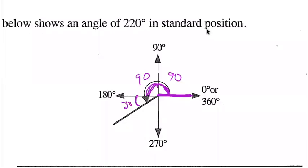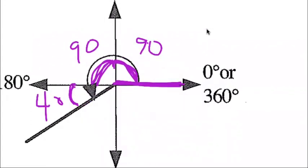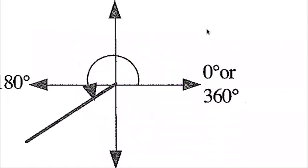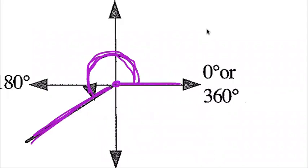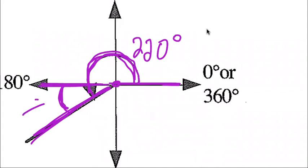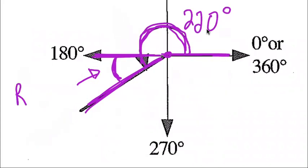90 and 90 is 180. We want 220, so this is going to be 40 degrees. This is a rotation angle — it starts in standard position on the x-axis and goes through some rotation, ending up on the terminal arm, with the vertex at the origin. This is a 220-degree rotation angle. This angle formed between the terminal arm and the closest x-axis is called the reference angle.